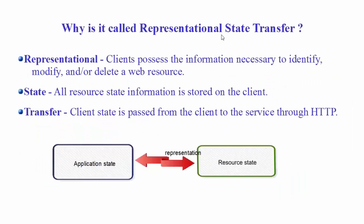Why is REST called Representational State Transfer? Representational State Transfer refers to transferring representations. The representation can be sent in the form of JSON, text, HTML, or XML. We use the representation of the resource to transfer the resource state — which lives on the server — into the application state on the client. The client possesses the information necessary to identify, modify, or delete a web resource and decides which form of representation it wants.